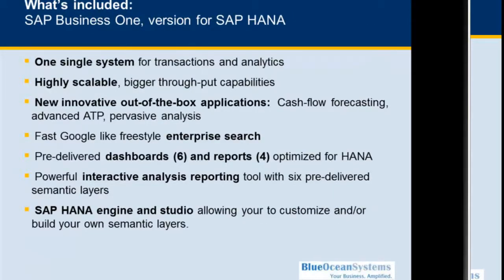As a summary: one single system for both transactions and analytics is highly scalable. Configurations of the HANA appliance start from as low as 32GB, 64GB, 128GB — and it can also handle extra-large volumes of data rapidly. SAP Business One on HANA provides a platform for innovation, and we will demonstrate some of these with cash flow forecasting, advanced ATP, and pervasive analytics.